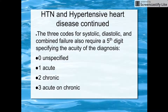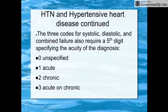Three codes for systolic and combined heart failure also require a fifth digit. Zero on your last number would be unspecified heart failure. One would be acute. Two is chronic. Three is acute and chronic.